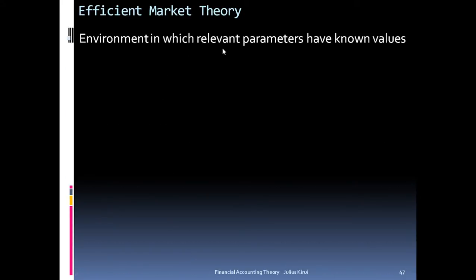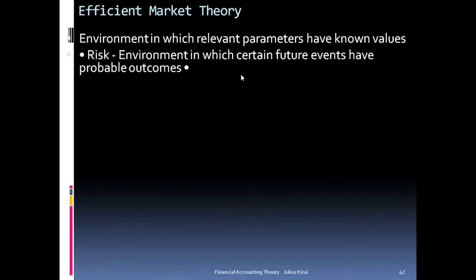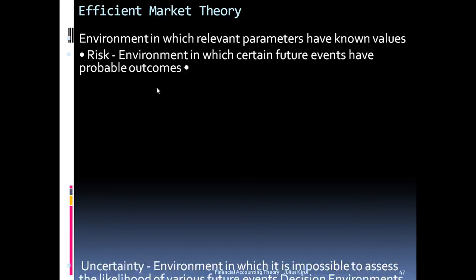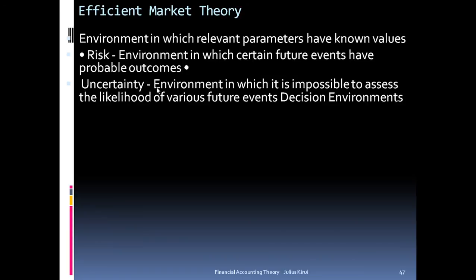Certainty is an environment in which relevant parameters have known values. Risk is an environment in which certain future events have probable outcomes. Uncertainty is an environment in which it is impossible to assess the likelihood of various future events.